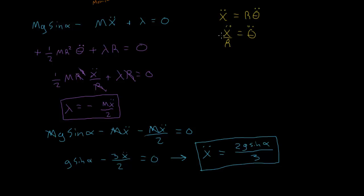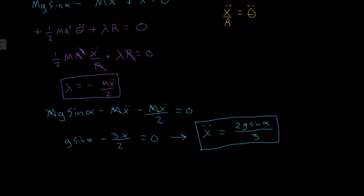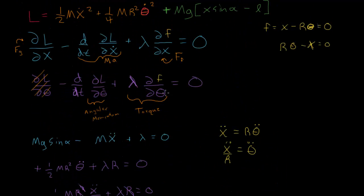Actually now that we have x double dot over r equals theta double dot, we can just divide this by r to get theta double dot. So theta double dot equals all of this stuff, 2g sine alpha over three, and then also divided by r, so three r. So we could have gotten this by doing it the other way, but doing it this way, we now have information about lambda, which is information about the force and about the torque.